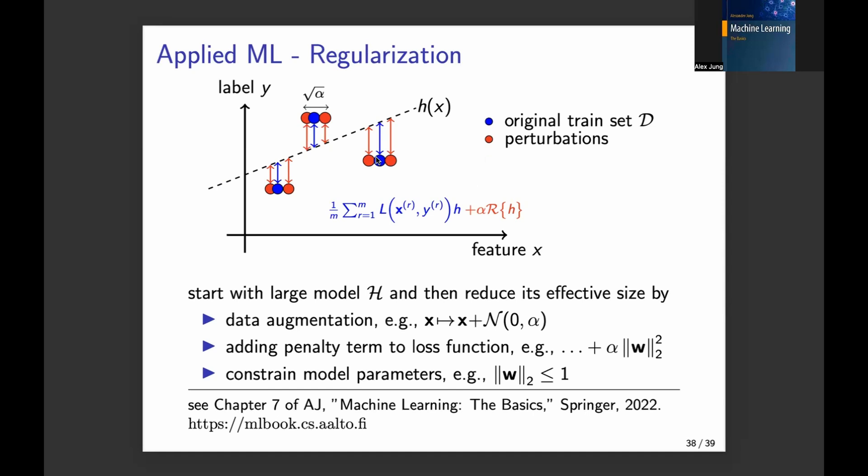And different data augmentation methods are obtained by different choices for this perturbation. So this perturbation could be just add some random noise, or if a data point is an image, it could mean to rotate an image. Because often when you rotate an image, its label, for example, if it shows a cat, doesn't change.